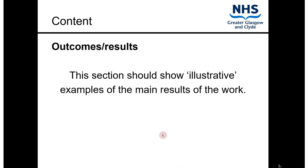Your outcomes and results should show illustrative examples of the work. This might be the point where you introduce some visual imagery — you may show staff working with patients, or have quotes and bubbles and bullet points about the feedback you got. It's about maybe not having everything written in text and paragraphs, but having some things that attract attention. And that obviously has to show your outcomes and results.